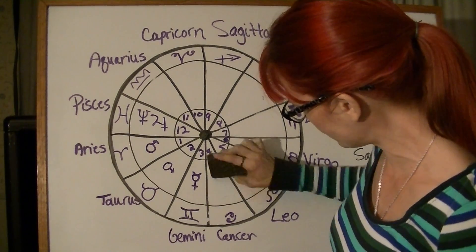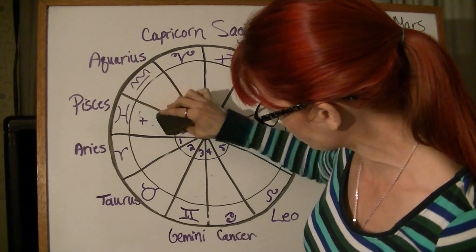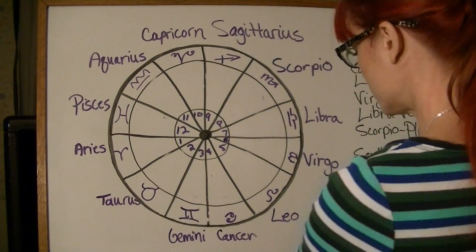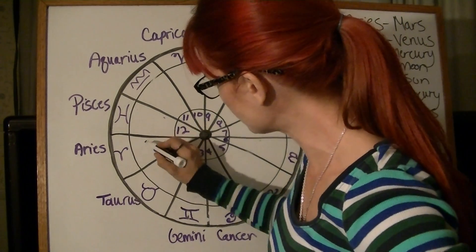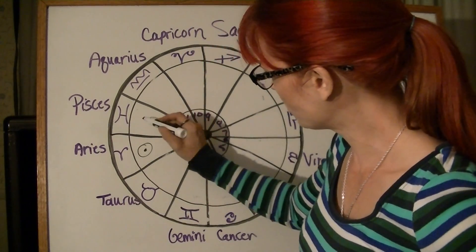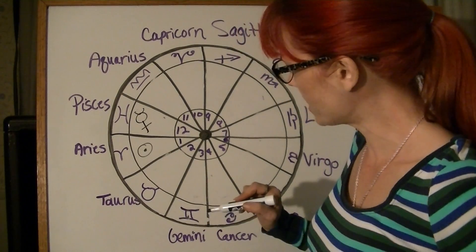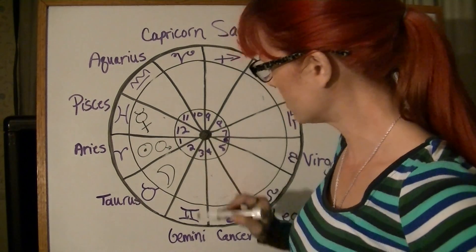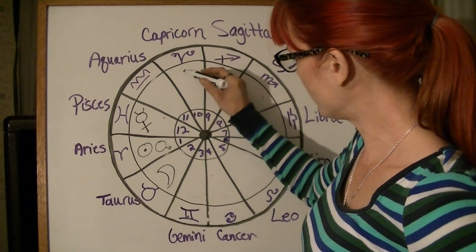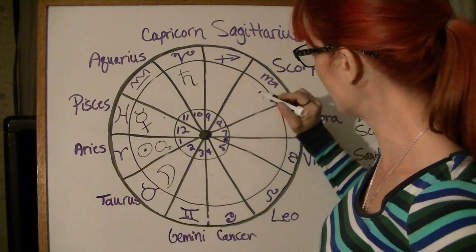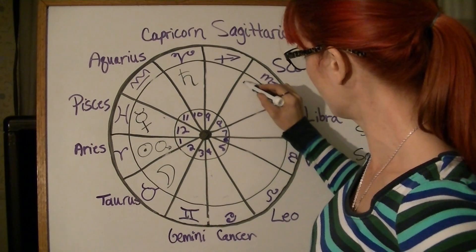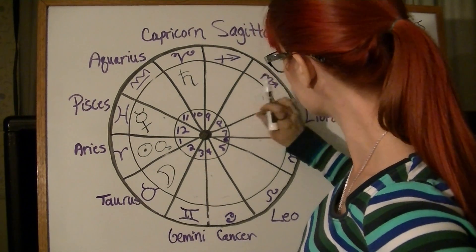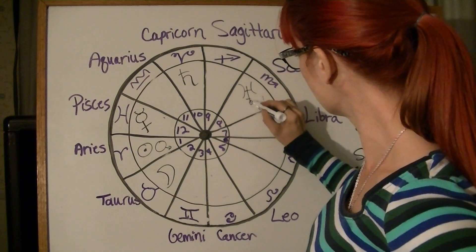Now let's erase the planets and put them in different places to talk about where the rulers of these signs are located. Let's put the Sun in Aries, Mercury in Pisces, the Moon in Taurus, Venus with the Sun, Saturn in Capricorn, and Uranus in Scorpio.